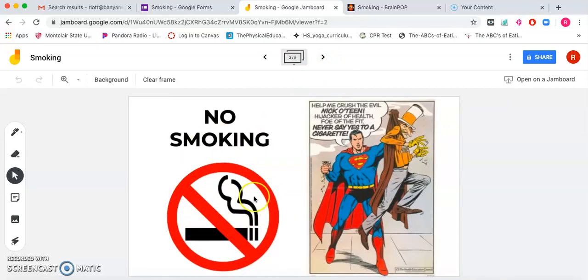This is a no smoking sign. So you might see that in a lot of restaurants, some public areas, especially in New Jersey. There's not much smoking allowed at restaurants or public areas. So this is a sign that would say that no smoking is allowed. And this is a little cartoon with Superman and someone smoking a cigarette.